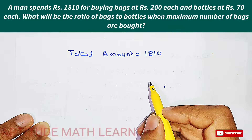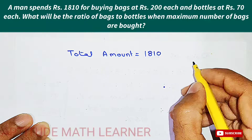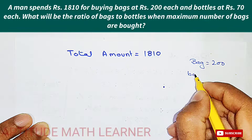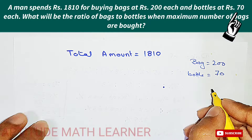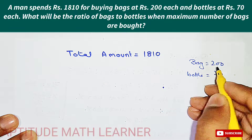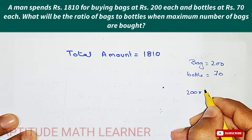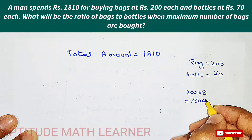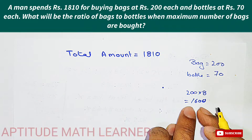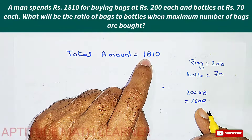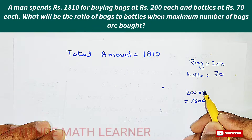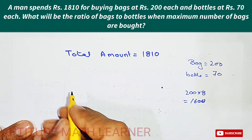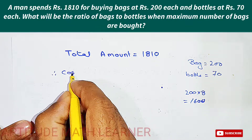We need to find the maximum number of bags. The price of each bag is 200 rupees and each bottle is 70 rupees. If we multiply 200 by 8, we get 1600, which does not exceed 1810. But if we multiply 200 by 9, it would exceed the amount. So the maximum number of bags that can be purchased is 8.